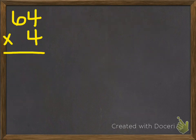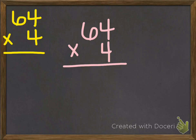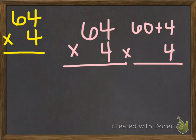This time, I want to try the algorithm without drawing the area model. Remember, because it's expanded algorithm, I'm thinking of this 64 as 60 plus 4. And the 4 is still just a 4. So let's get started with our ones.